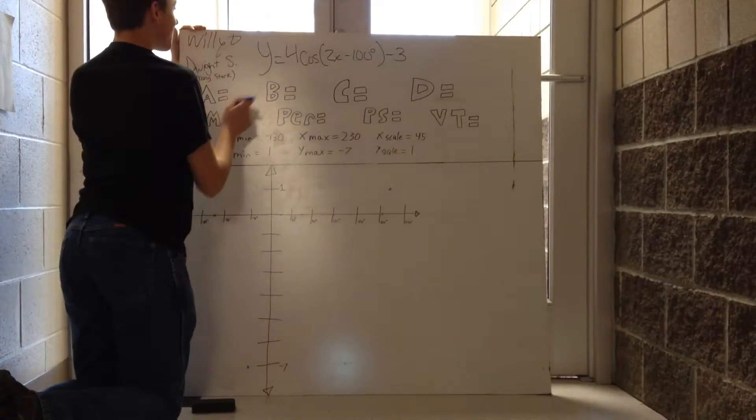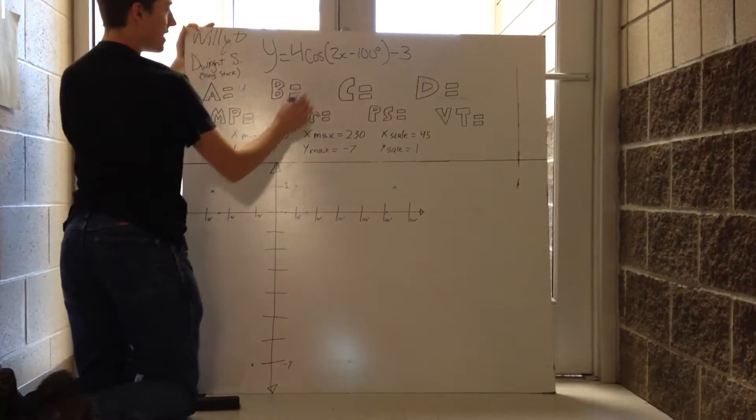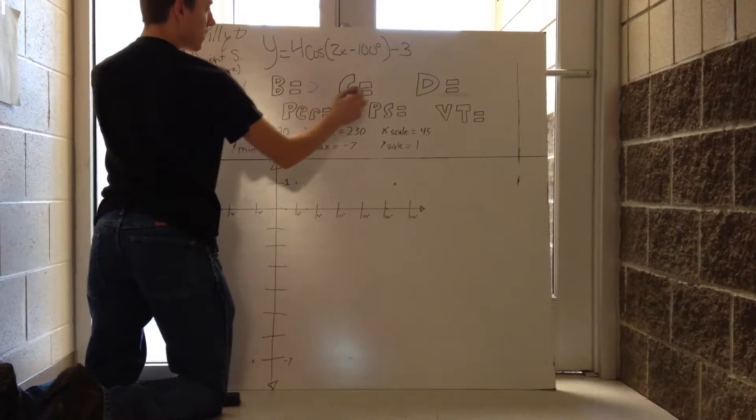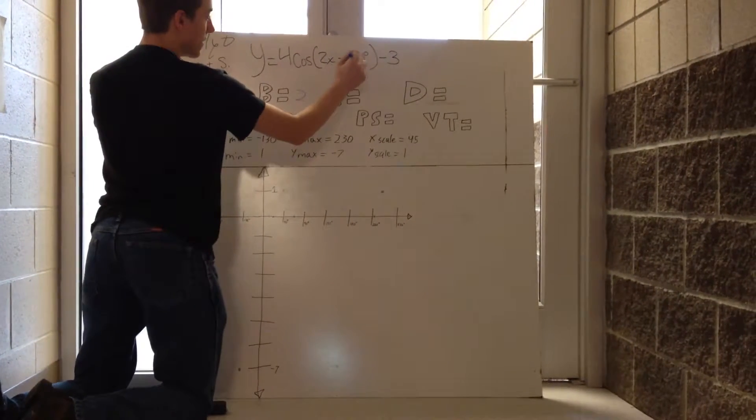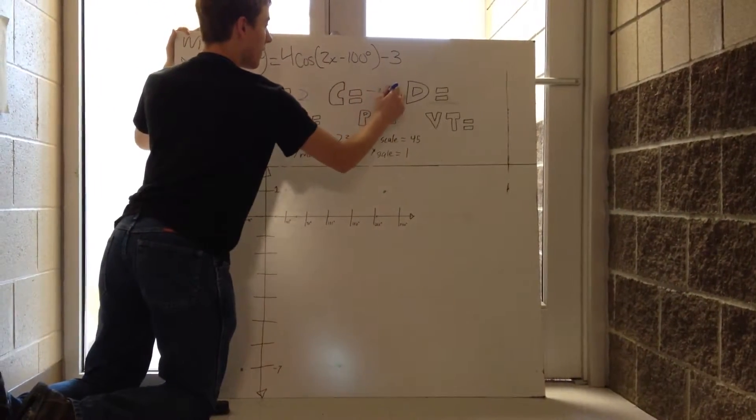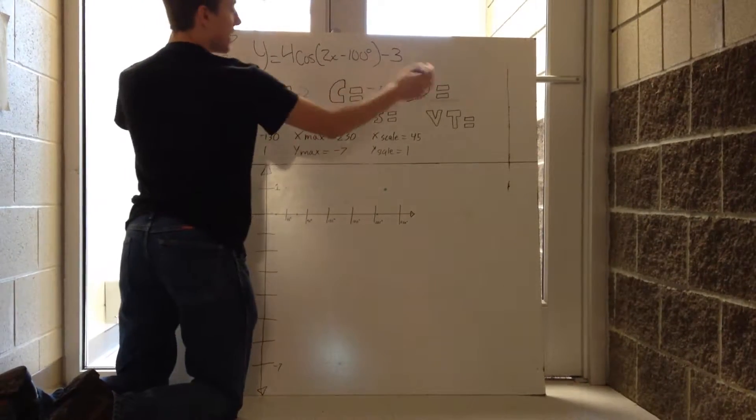So for A, it'll be 4. For B, it'll be that 2. For C, it'll be negative 100. For D, it'll be that negative 3.